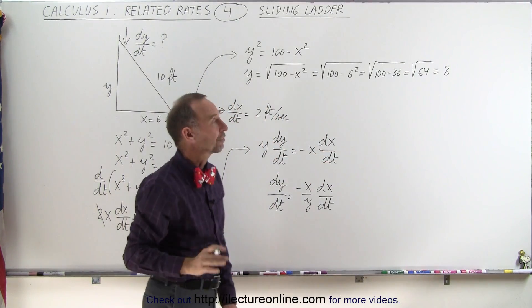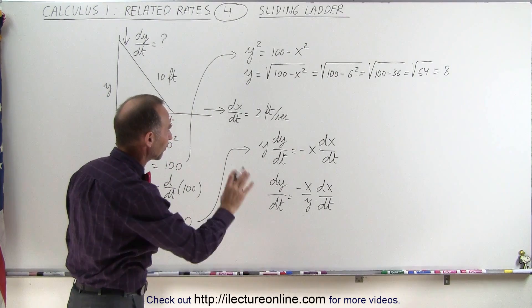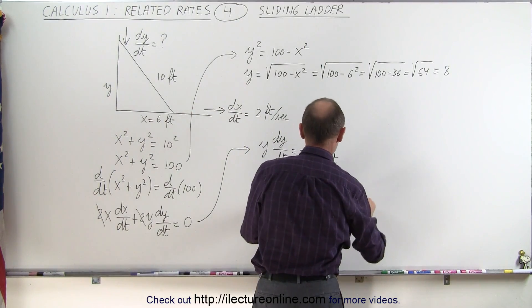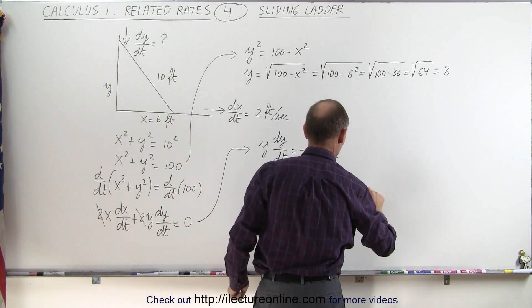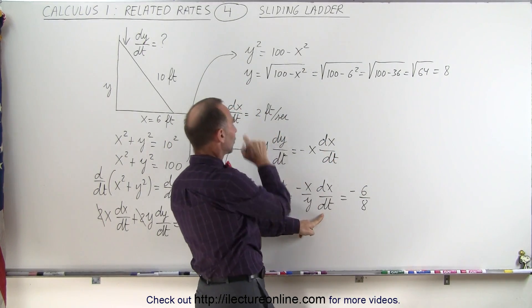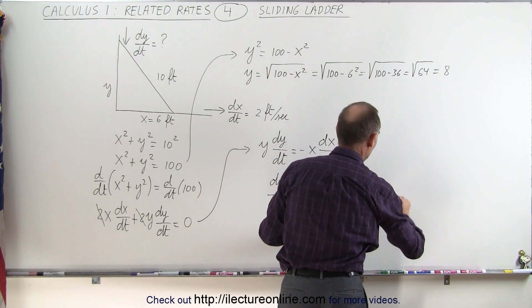So now we have the value for x, the value for y, and the value for dx/dt. In this case, dy/dt becomes minus x, which is 6, divided by y, which is 8, times dx/dt, which is 2 feet per second.